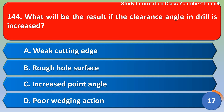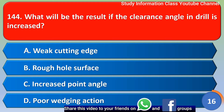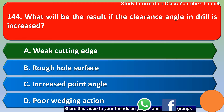Next question: What will be the result if the clearance angle in a drill is increased? Option A: weak cutting edge, Option B: rough hole surface, Option C: increased point angle, Option D: poor wedging action. The correct answer is Option A, weak cutting edge.